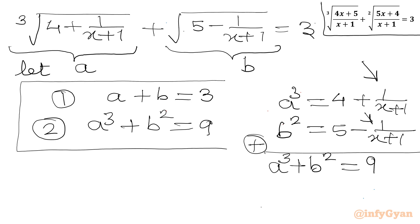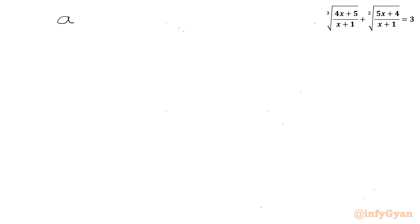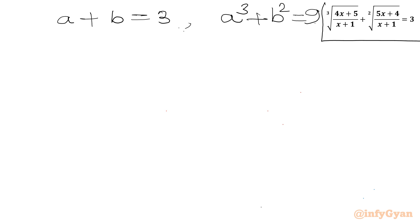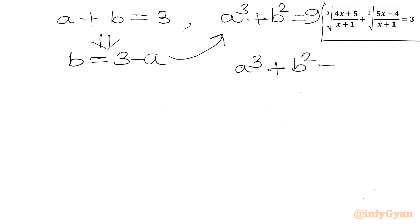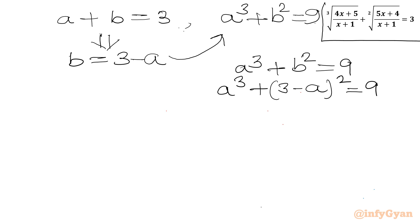Now we solve this system: a + b = 3 and a³ + b² = 9. From the first equation, b = 3 - a, which I substitute into the second equation: a³ + (3 - a)² = 9.